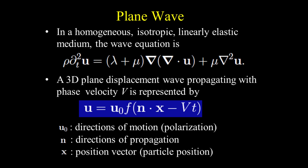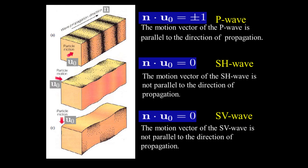A 3D plane displacement wave propagating with phase velocity V is represented by a simple formula, where U0 and N are unit vectors defining the directions of motion — that is, polarization — and propagation respectively, and X denotes the position vector. It is a solution of the wave equation. The scalar product of the position vector and the direction of propagation is the equation of a plane normal to the unit propagation vector N. Here are the descriptions of P wave, SV wave, and SH wave based on the direction of propagation and particle motion.